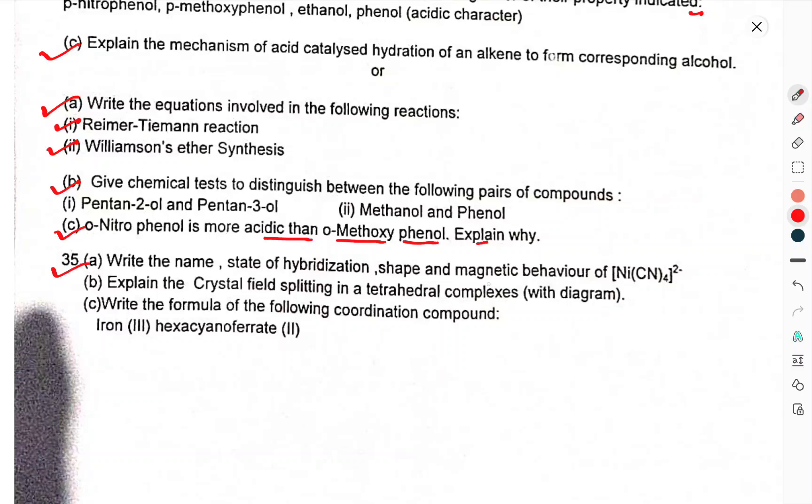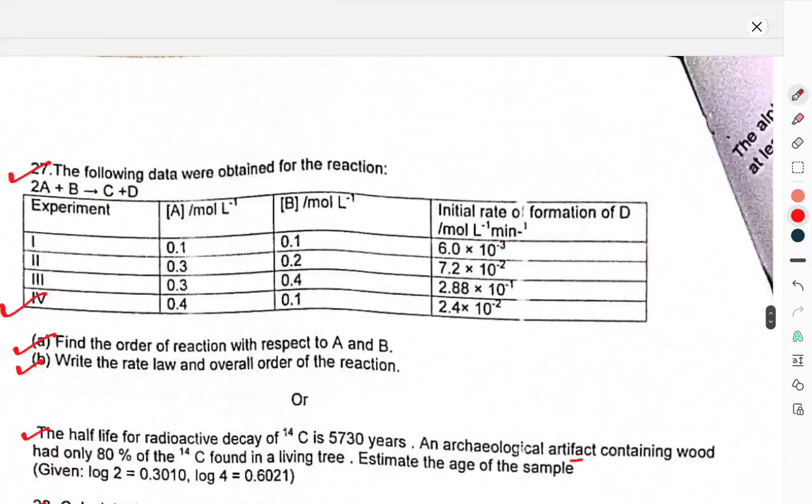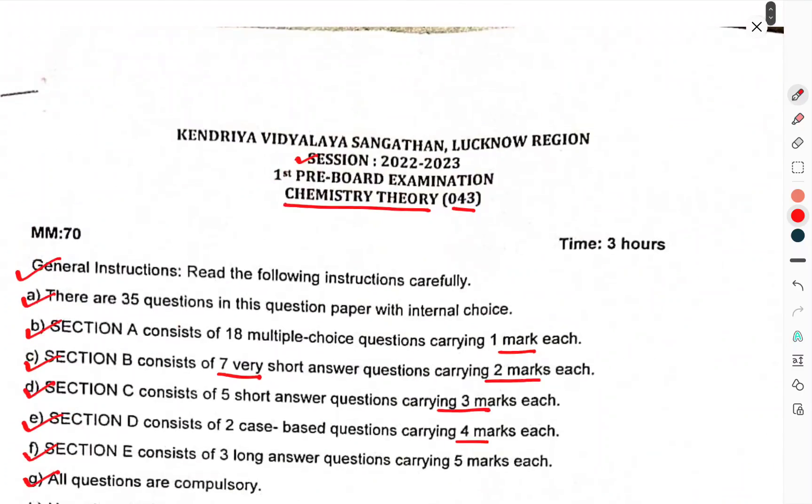Question 35: Write the name, hybridization, shape, and magnetic behavior of [Ni(CN)4]²⁻. Explain crystal field splitting in tetrahedral complex with diagram. Write the formula of the following coordination compound: Iron(III) hexacyanoferrate(II). So, this was the question paper of class 12th pre-board first. That's enough for this one. Thank you.